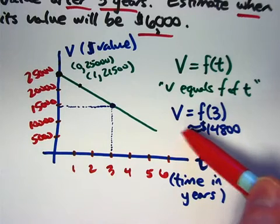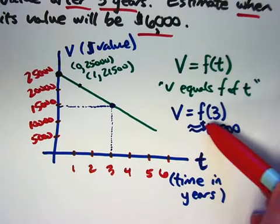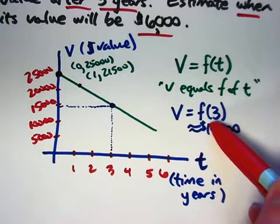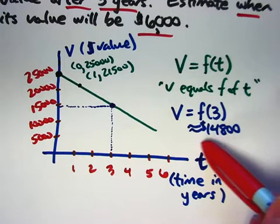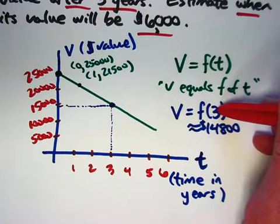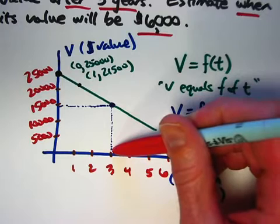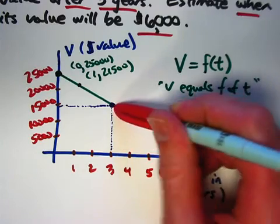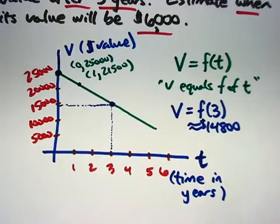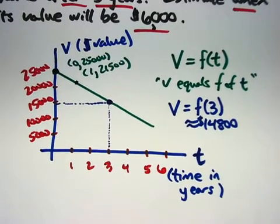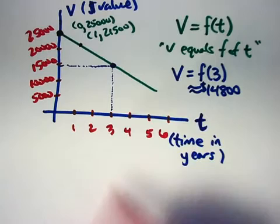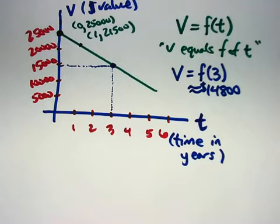When you want to estimate the value of the car after three years, you write it symbolically like this. What's the value V when t equals three? V equals f of three represents the value, and we can estimate that by saying, okay, I'm plugging t equals three into the function. I can estimate the output for that input by going to the graph, going to three on the horizontal axis, going up to the graph, and then over to the vertical axis. I estimated that it was about $14,800. That was actually not completely accurate. I purposely did not do it accurately, just to emphasize that this kind of visual approach will necessarily lead to some errors in estimations.